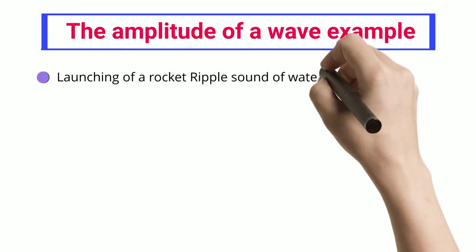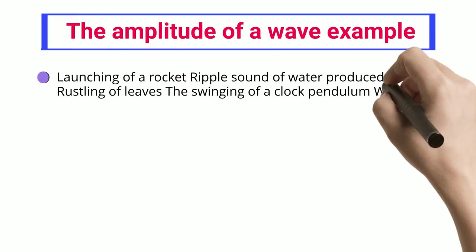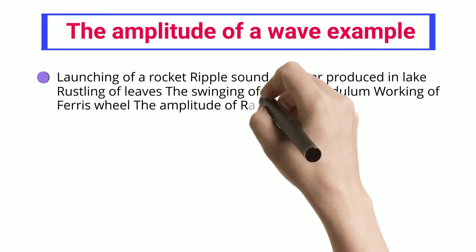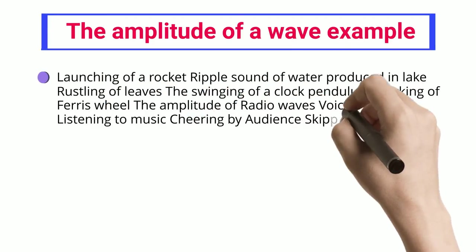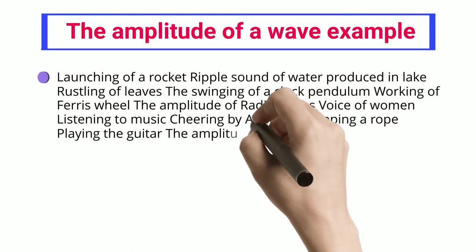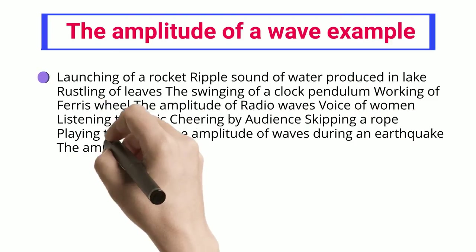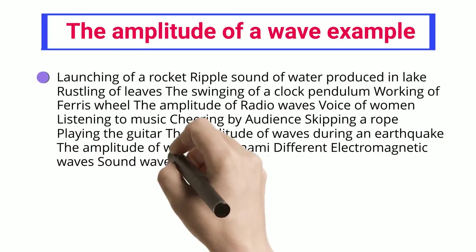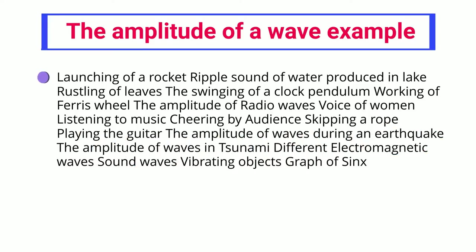Examples include: launching of a rocket, ripple sound of water produced in a lake, rustling of leaves, the swinging of a clock pendulum, working of a Ferris wheel, the amplitude of radio waves, voice of women, listening to music, cheering by audience, skipping a rope, playing the guitar, the amplitude of waves during an earthquake, the amplitude of waves in a tsunami, different electromagnetic waves, sound waves, vibrating objects, and graph of sine.